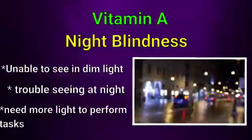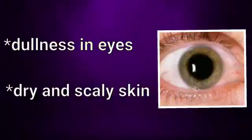Vitamin A deficiency is called night blindness or nyctalopia. The person is unable to see in dim light, has trouble seeing at night especially during transition from bright light to dim light and vice versa. They need more light to perform tasks. Other symptoms include dullness in eyes and dry and scaly skin.